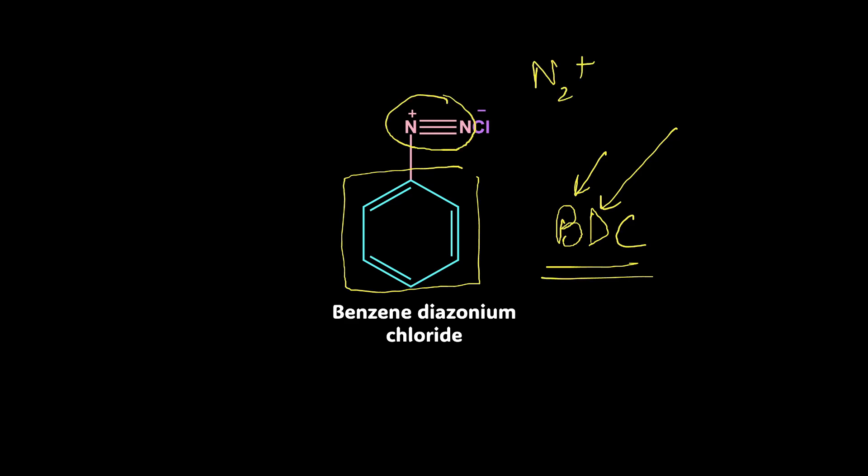And this one is chloride. Hence, the name benzene diazonium chloride. This is the starting material for Sandmeyer reaction. How is this BDC prepared? We need to know this first and then from this BDC, we will know how to prepare our aryl halide.